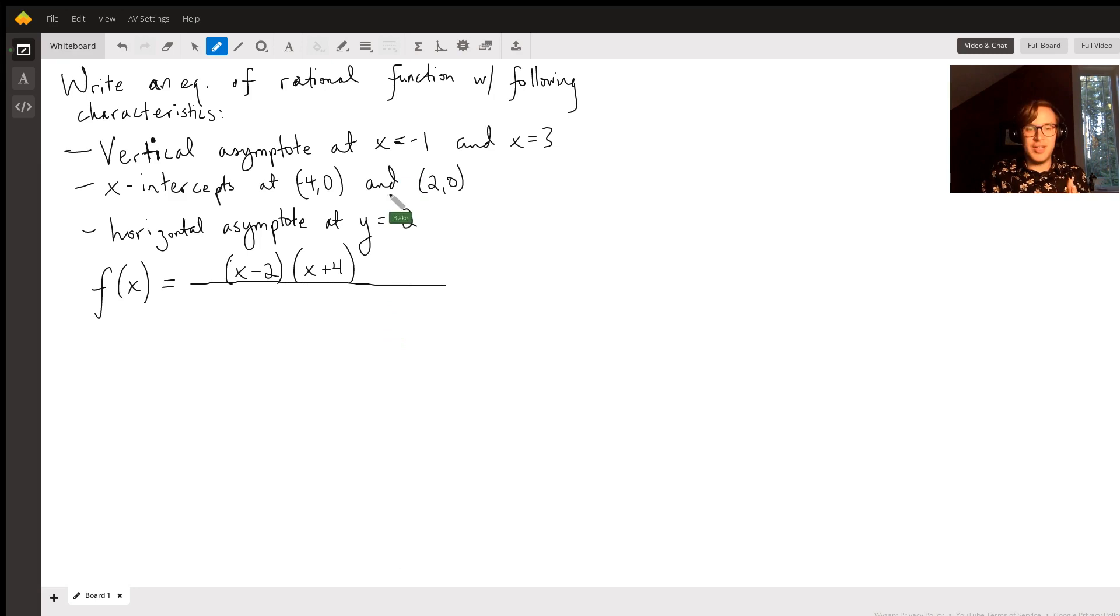So we need to put in the factors x plus 1 and x minus 3 on the bottom. Because that would mean that we'd get a vertical asymptote at negative 1, because if we plugged in negative 1, we'd get 0 here, and positive 3. So if we plugged in positive 3, we would get 0. That would mean that there would be vertical asymptotes at x equals negative 1 and x equals 3.